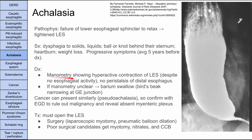To make the diagnosis, manometry is used, which shows hyperactive contraction of the lower esophageal sphincter with no peristalsis throughout the rest of the esophagus. If manometry is unclear, a barium swallow can be done, showing the classic bird's beak appearance — narrowing at the gastroesophageal sphincter. Since cancer can also present similarly, an EGD should be done to rule out malignancy before confirming achalasia.